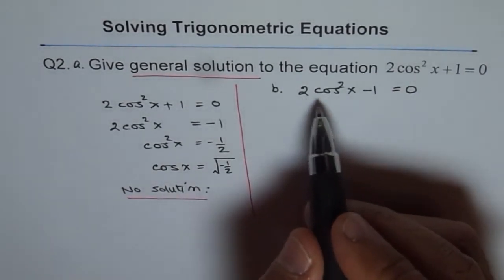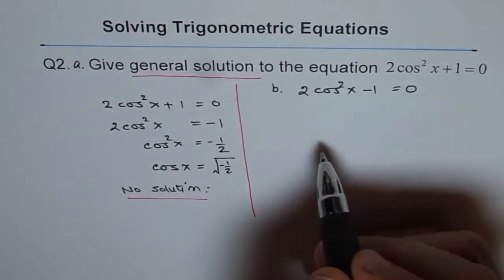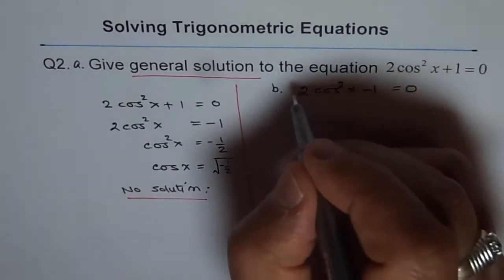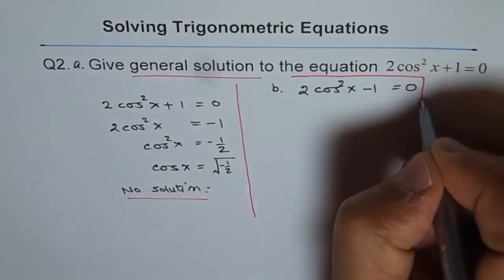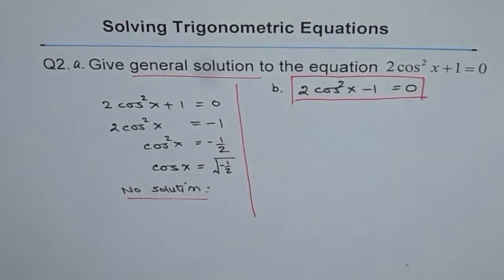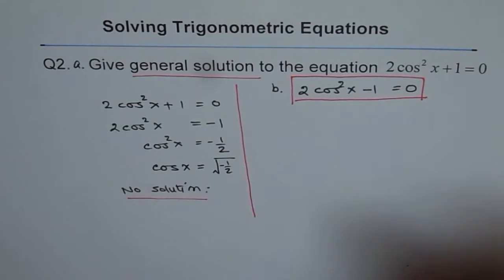Now, let's do it again with 2 cos square x minus 1 equals to 0. If that is the question B asked, we'll just say now we are solving this question. Let's be very clear about it. What are we solving?